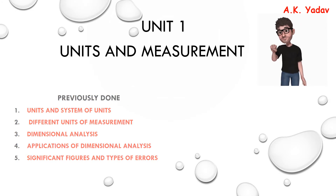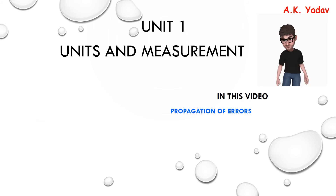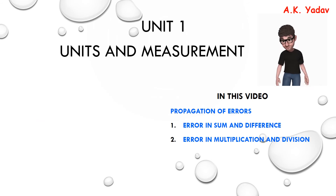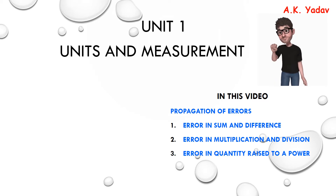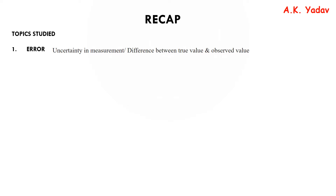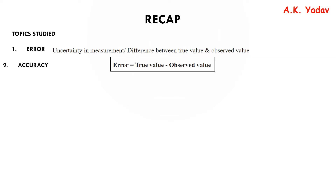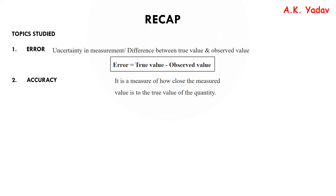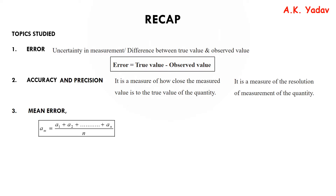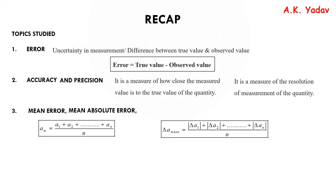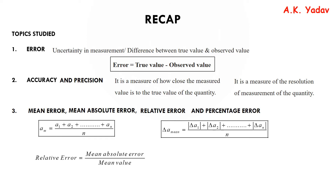They are explained in the best possible manner. Now what we are doing in this video: the propagation of error — error in sum and difference, error in multiplication and division, and error in a quantity raised to a power. Let's do a recap of what we have already studied. Error is true value minus observed value. Accuracy and precision, mean error, mean absolute error, relative error, and percentage error — all these things are explained in the previous videos.